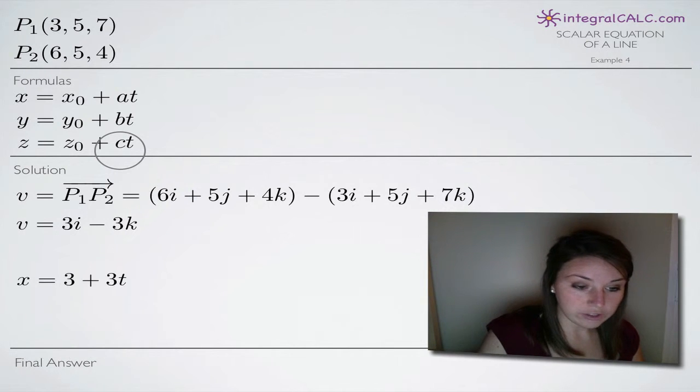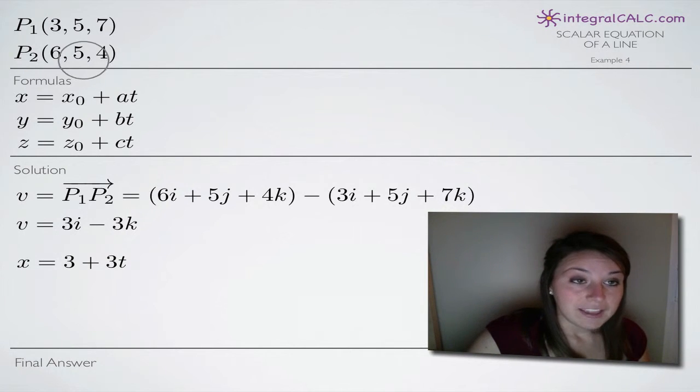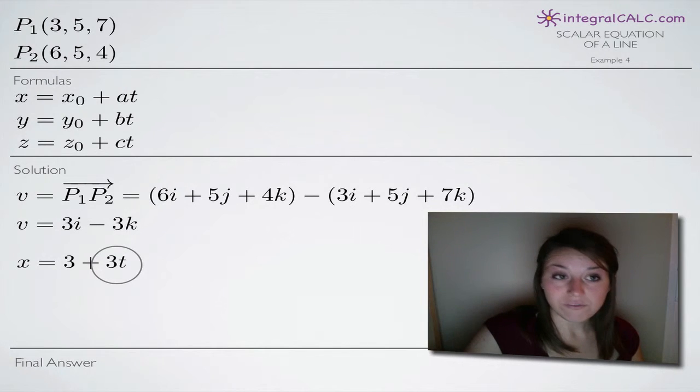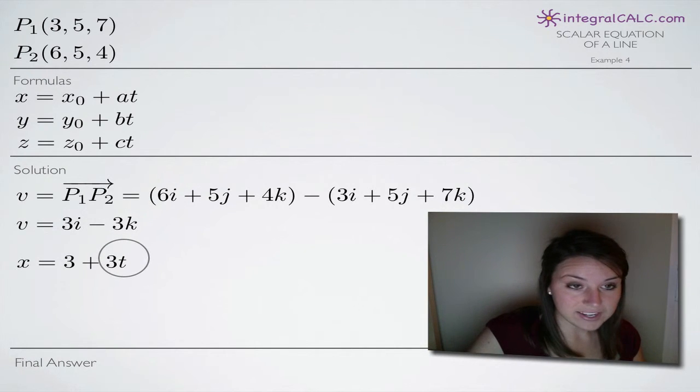So what that looks like, again, we'll plug in 3 for x₀, so you can see we've plugged in 3 here. Our coefficient on i is 3. So remember the coefficient on i goes in for a, so we end up with +3t. And we always leave the variable t because our scalar equations are going to be in terms of t even in our final answer.